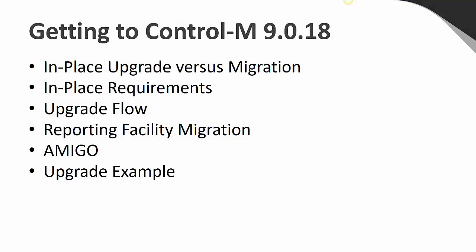At a very high level, I want to discuss the process and considerations for getting to CTRL-M 9.18. We'll look at in-place versus migration, plus the requirements. We'll talk about the upgrade flow, including the migration of reports to the new reporting facility. Finally, a reminder about Amigo, and then a quick look at all the different steps of an in-place upgrade.